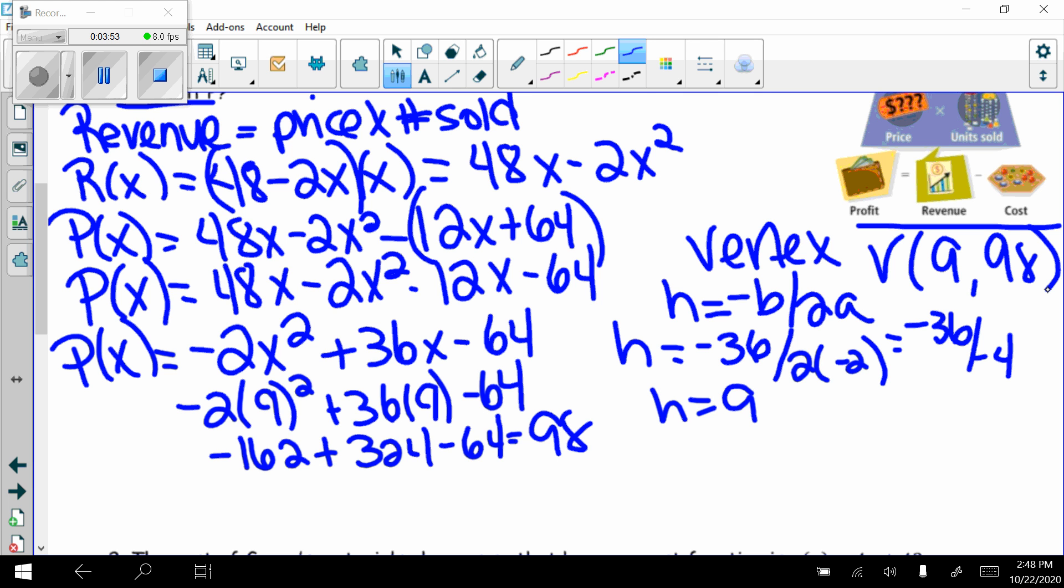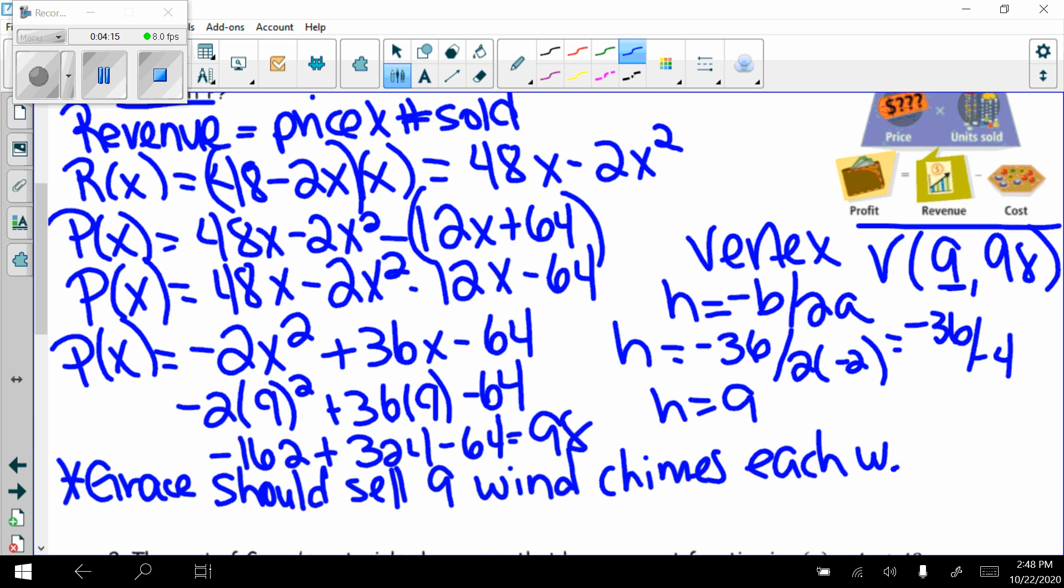So now I need to answer the question, since it was a word problem. How many wind chimes should Grace sell? The x is my wind chimes, so Grace should sell 9 wind chimes each week for a maximum profit of my y value, $98.